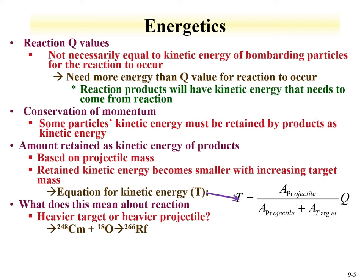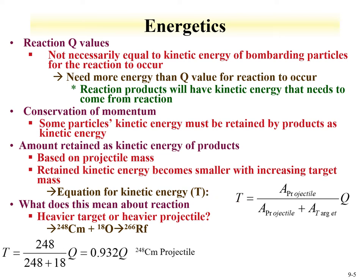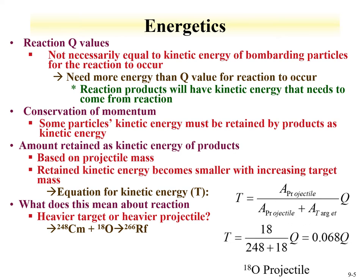Consider the reaction curium + oxygen-18 → rutherfordium-266. If we accelerate curium into an oxygen target, the kinetic energy retained is approximately equal to the Q value, since the fraction is 248 / (248 + 18). If instead we accelerate oxygen into a curium target — which is what's done experimentally — the kinetic energy retained is a smaller fraction of the Q value. This is one reason why accelerating the lighter particle into the heavier target is preferred.